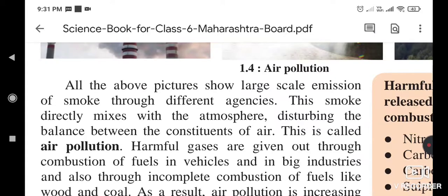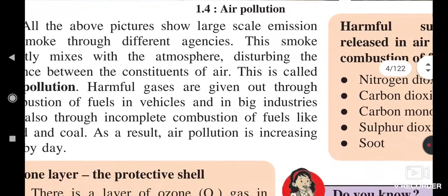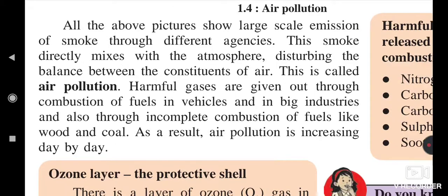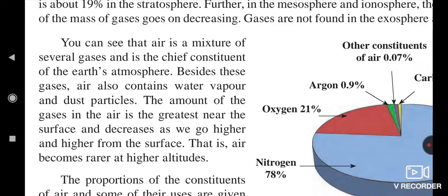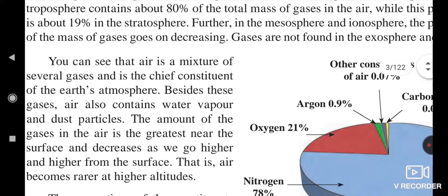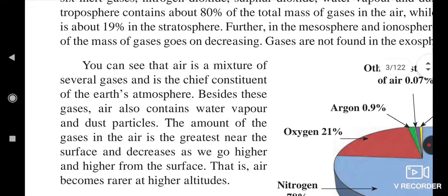The stratosphere contains heavy gases in dense form near the lithosphere — major gases constitute about 19 percent in this layer. In the mesosphere, the density of gases reduces. In the ionosphere, gases have less mass. And gases are not found in the exosphere and beyond.